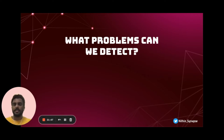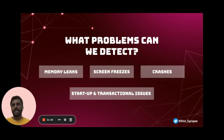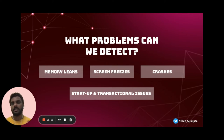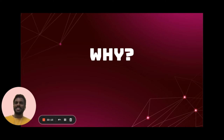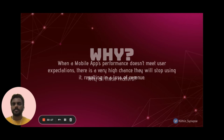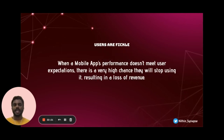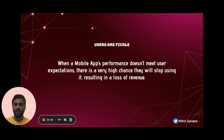There are four main categories of problems which we can detect during the early performance testing phase: memory leaks, screen freezes, crashes identified earlier in the lifecycle, and startup and transaction issues on our applications. Why does all this matter? Users tend to go to our competitors if our app is not performing well. When a mobile application's performance doesn't meet user expectations, we will lose our revenue and customers.